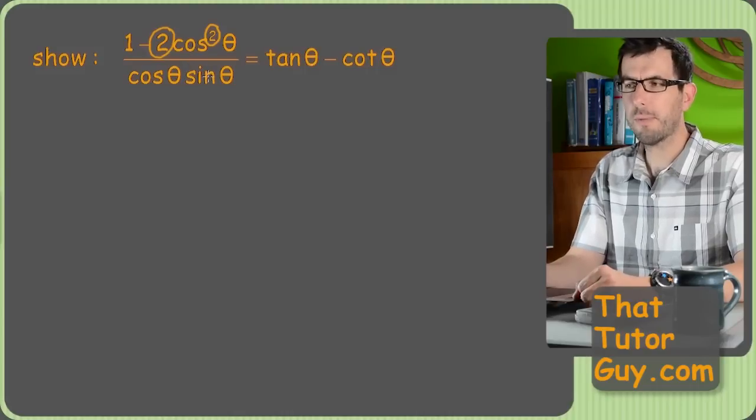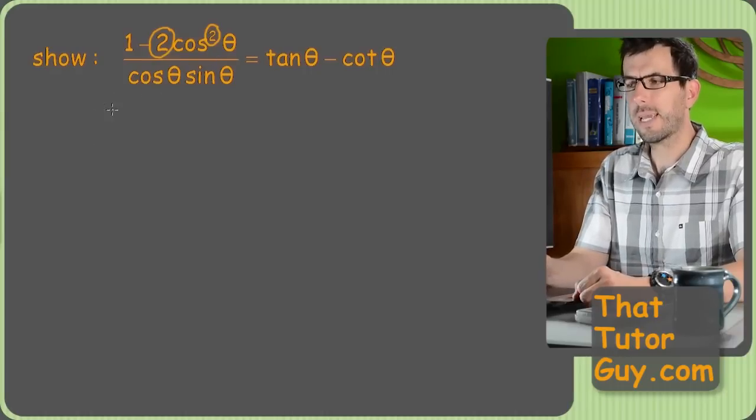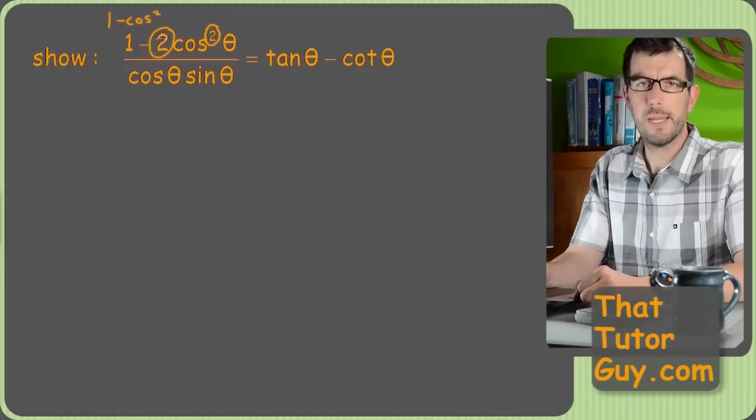But you know what? I don't really see any other options. So I'm going to try and just manipulate this top until it looks like something I like better. Because I kind of wish it was one minus cosine squared, right? If it was one minus cosine squared, that would be an identity.